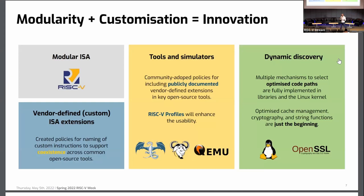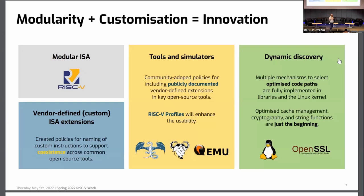Unfortunately for us on the software side, the work is not done when the silicon is here — it really starts then. Doing that for one piece of silicon would be easy: you know exactly what's in there, you support it properly, you're done. The only problem is there are lots of pieces of silicon coming from lots of vendors. We have this modular ISA, which is a defining factor of RISC-V, but it's also very challenging to software implementers and tools vendors.